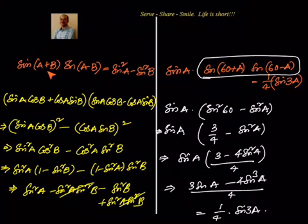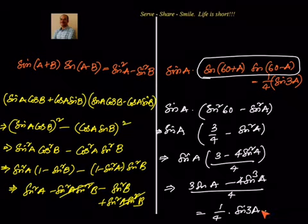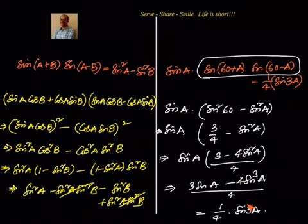Sine(a plus b) · sine(a minus b) = sine squared a minus sine squared b. Sine a · sine(60 plus a) · sine(60 minus a) = 1 by 4 · sine 3a. Similarly, do you have a formula for cos a · cos(60 plus a) · cos(60 minus a)? Try it out. All of these are important formulae which are useful to solve the problems.